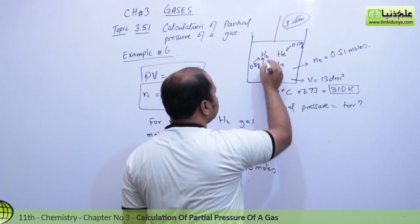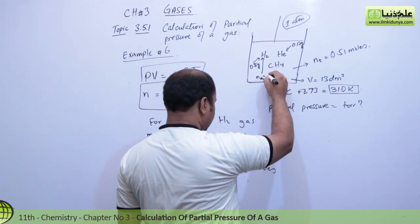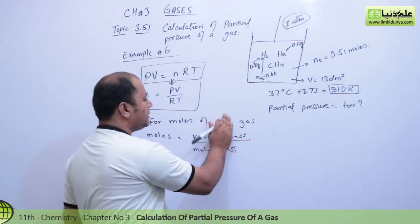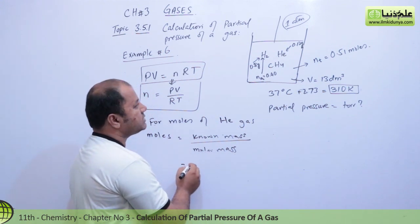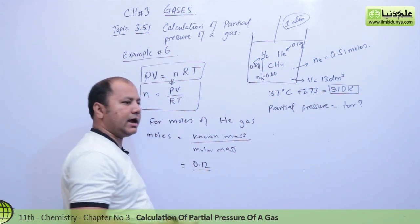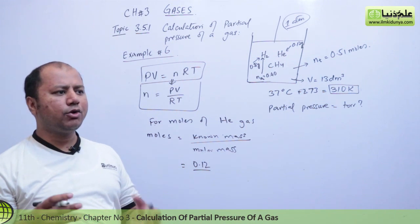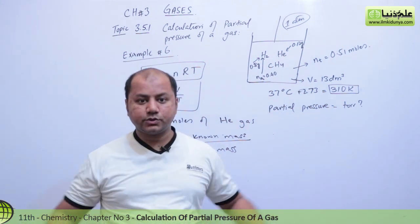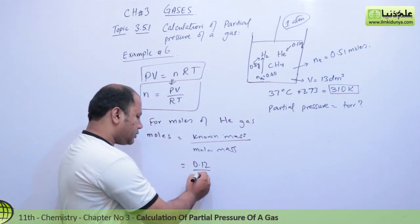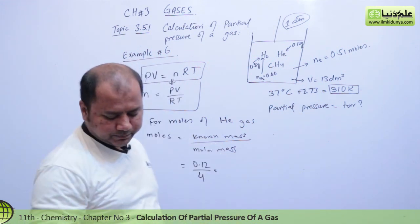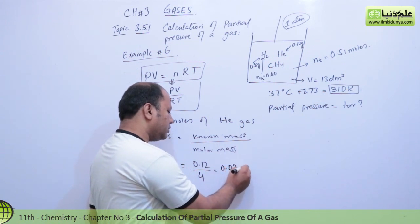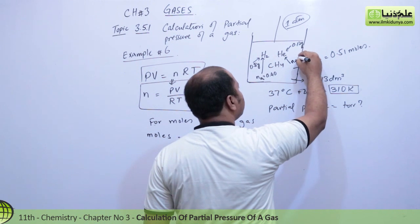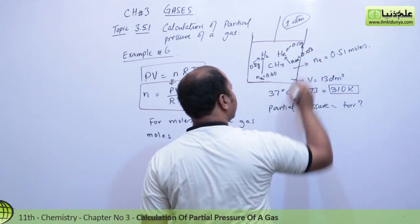So n(H₂) = 0.40 moles. Now for helium: the known mass is 0.12 g. Helium is a noble gas — noble gases don't bond with each other, they exist as monoatomic molecules — so the molar mass is 4 g/mol. Dividing 0.12 by 4 gives us n(He) = 0.03 moles.